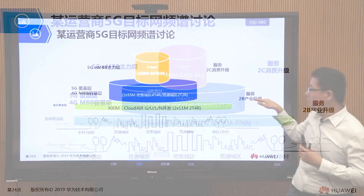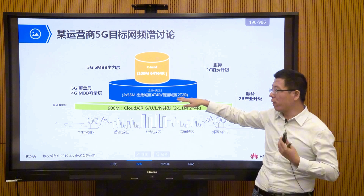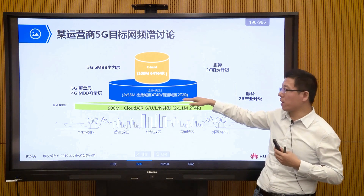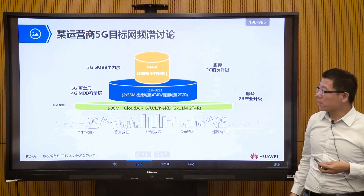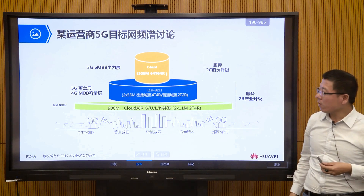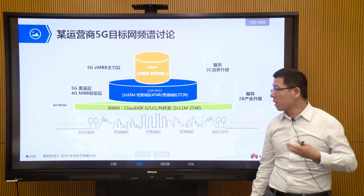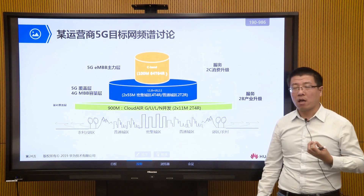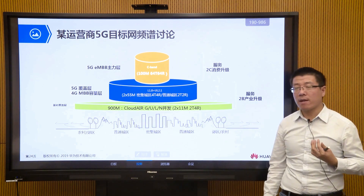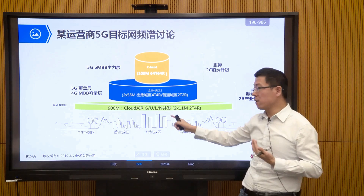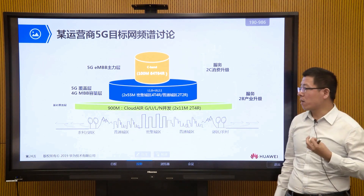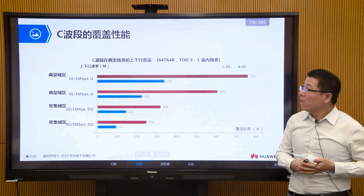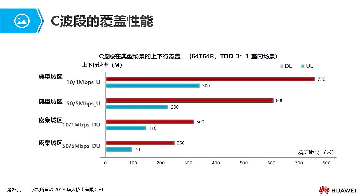For high-capacity consumer-oriented services, more capacity-focused deployments are used. For IoT services, coverage is the primary need rather than high speed or capacity. A technology called Cloud Air 2.0 is used to share air interface resources, enabling 2G, 3G, 4G, and 5G to concurrently share spectrum resources.